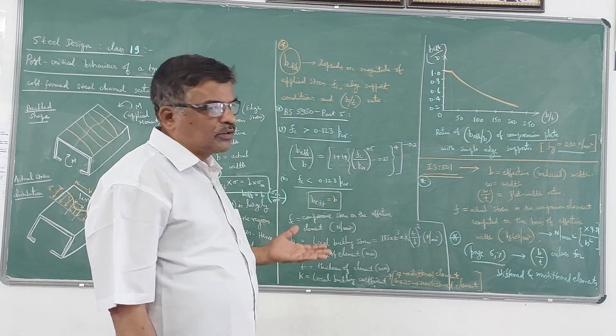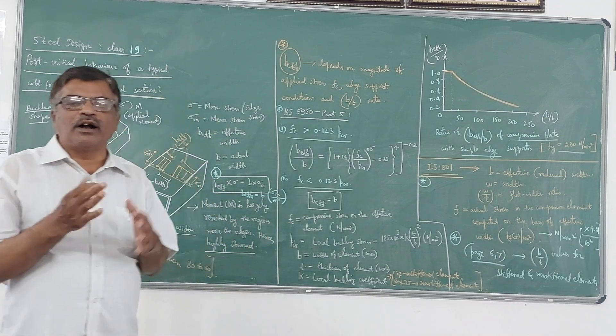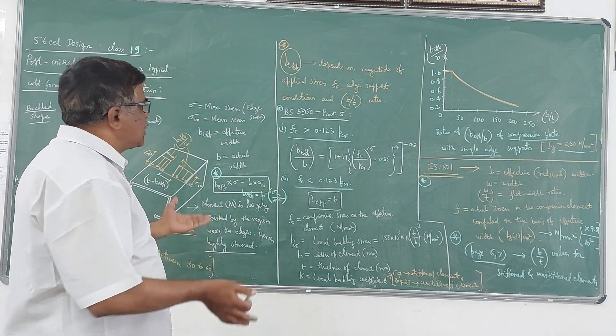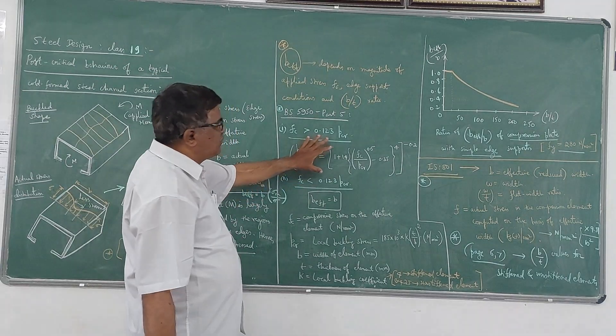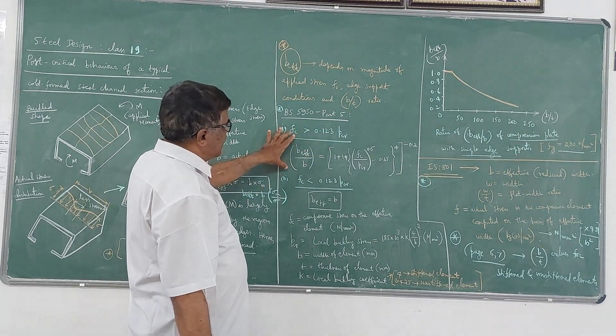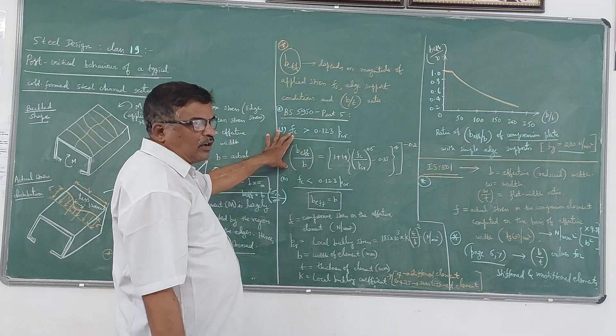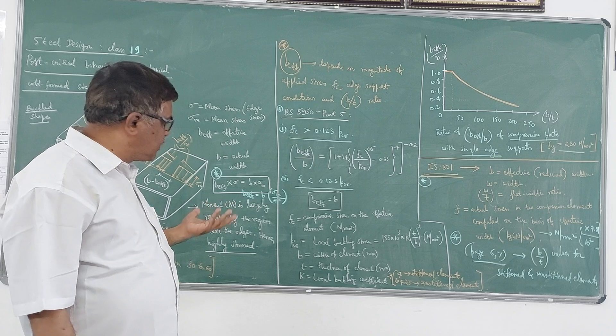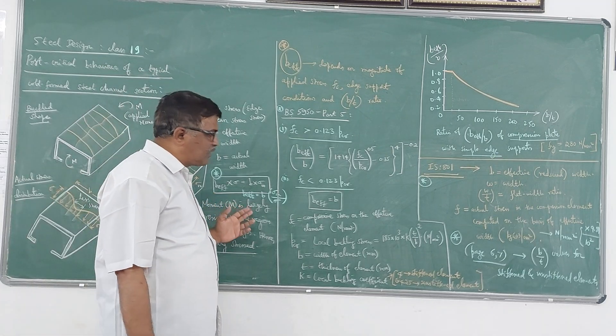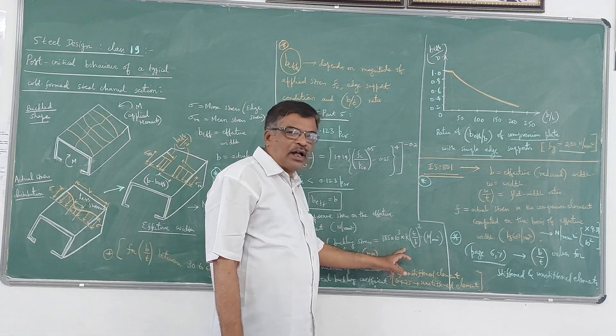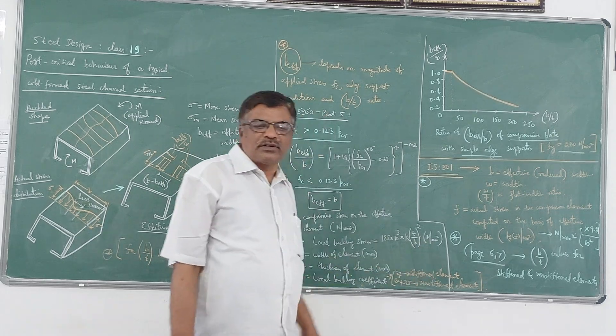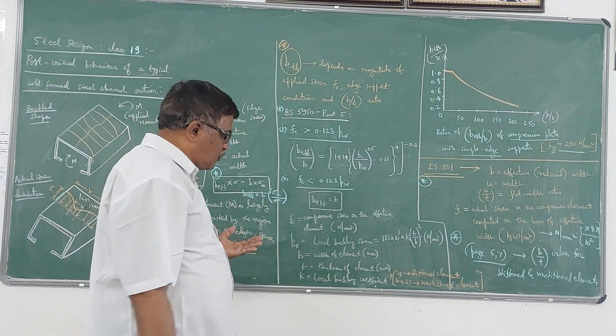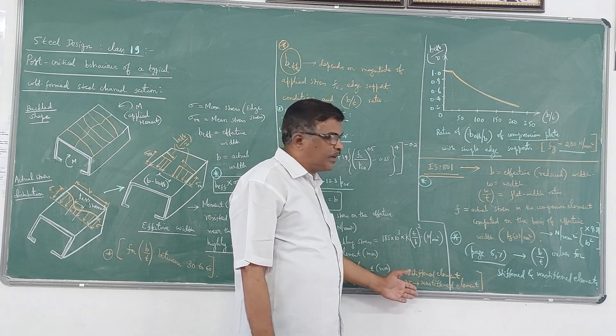Later on we discussed about the two codes which give you an idea about that, the ratio of B by T and also the ratio of B_effective by B. As per the European code, a British code, so this is the equation - of course it depends on the values of Fc and PCR, or the ratio of Fc and PCR. So PCR is calculated once again using this formula, where K value depends on whether it is a stiffened element or unstiffened element - so 4 and 0.425 respectively.